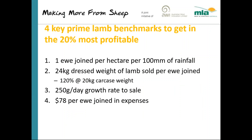To recap: if I had to pick only four key prime lamb benchmarks to get into the top 20% most profitable, these are the four. One ewe joined per hectare per 100 mm of rainfall. An average of 24 kg dressed weight per ewe from each ewe joined, achieved via 120% lambs weaned at a target market of 20 kg carcass weight. At least 250 grams per day growth rate to sale, hoping to get over 300 with good genetics and systems. And total operating costs under $78 per ewe joined.